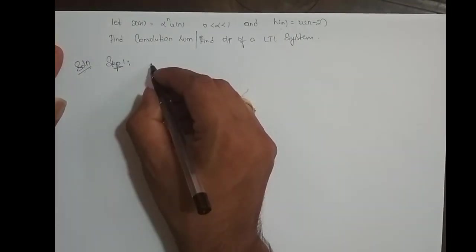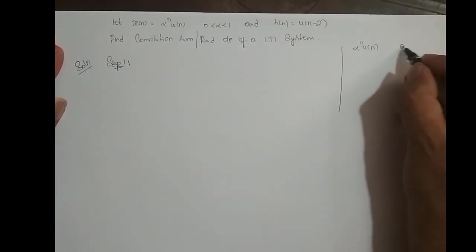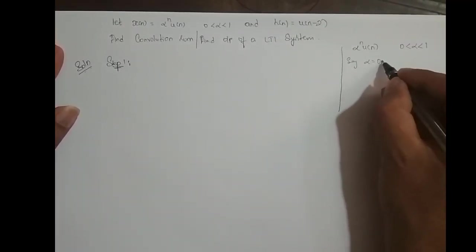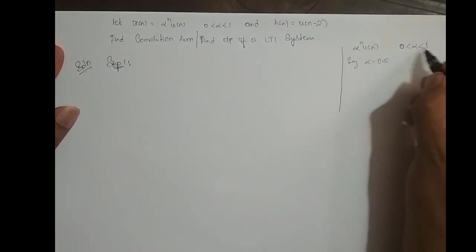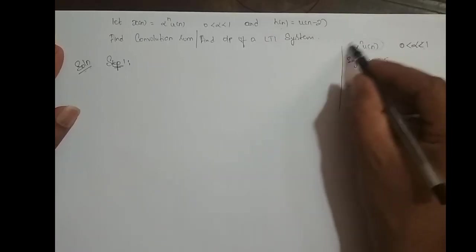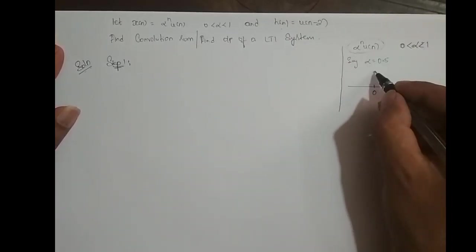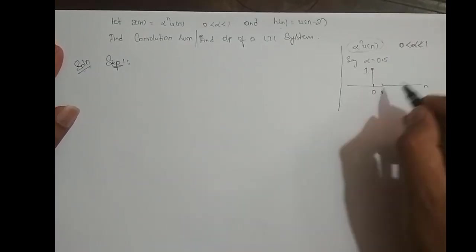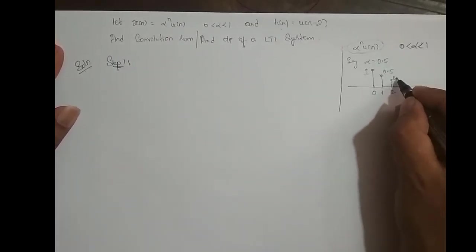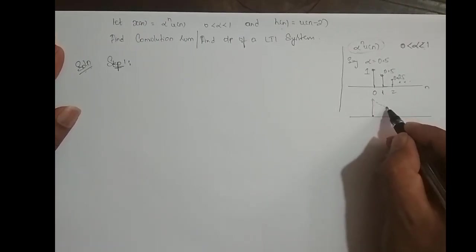Step 1: We have to sketch x(n) and h(-n). What is α^n · u(n) and what do we mean by α between 0 and 1? Say if α is 0.5 — I have assumed α is 0.5 because they gave the condition that α is between 0 and 1. At n=0, α^0 = 0.5^0 = 1. At n=1, 0.5^1 = 0.5. At n=2, it is 0.5 squared, and it goes on. So it is basically an exponentially decreasing signal.